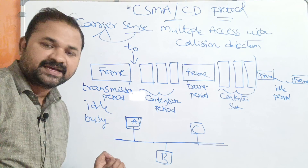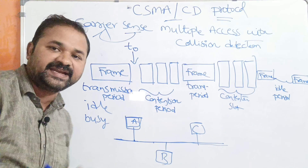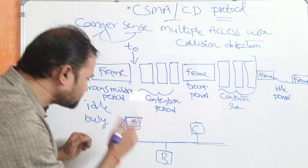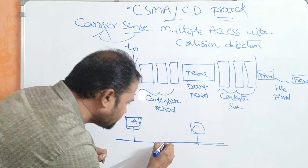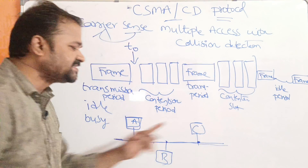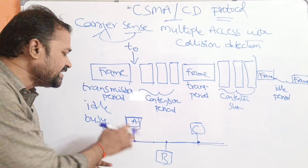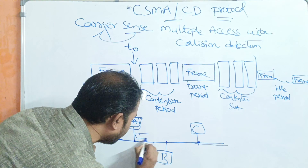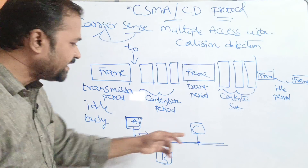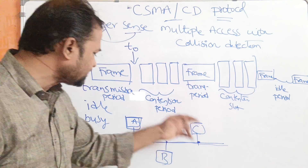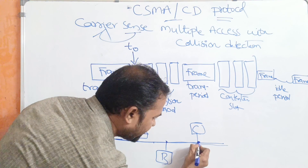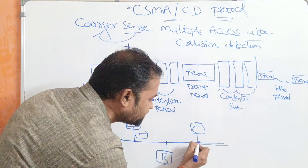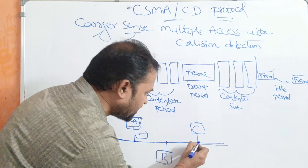If the carrier is busy, the station has to wait until the carrier becomes idle. It won't check the entire communication line. Station A checks only its own connection point, station B checks only its point, and station C checks its point. Let us assume that now the channel is idle.